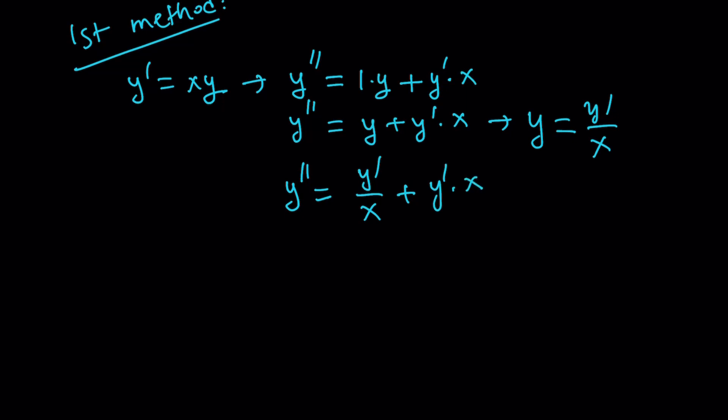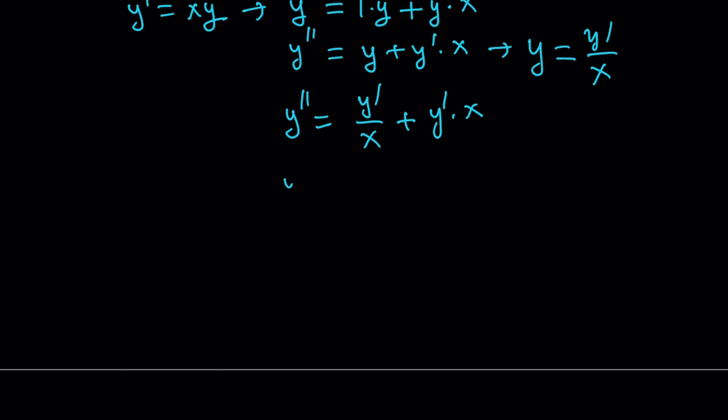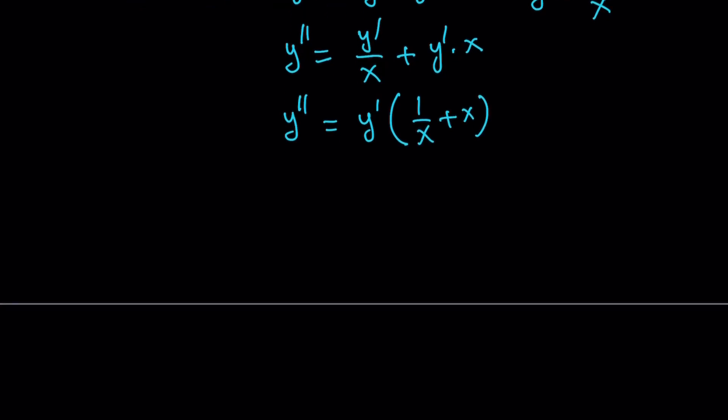Now, notice that the right hand side can be factored. We can take out y prime. And then inside the parentheses, we're going to get one over x plus x. And now we can make a common denominator. Well, I guess you don't need to because it's probably better that way.